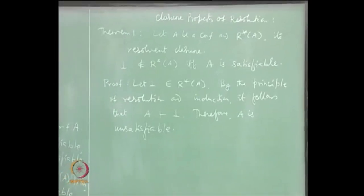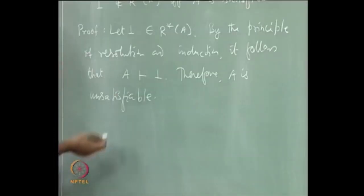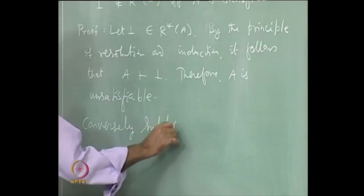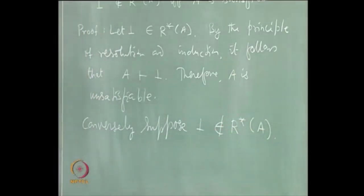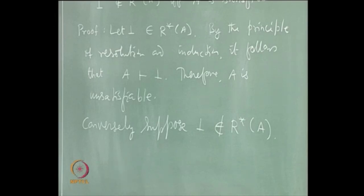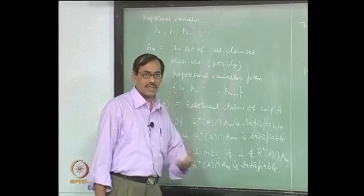This is really the soundness of resolution — if something has been obtained, it is really entailed by those premises. That is the soundness. Now we are going to do the completeness. Conversely, suppose bottom does not belong to R*A. Looking at the two results — lemma 1 and lemma 2 — what we have proved is: if bottom does not belong to R*A ∩ A_m, then that is satisfiable. So it should be clear now, because A itself is a subset.